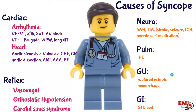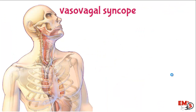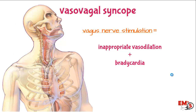The last category is reflex-mediated syncope, which includes vasovagal and orthostatic hypotension. Vasovagal syncope makes up a large portion of the patients we see. This is when you get an overdrive of vagus nerve stimulation causing vasodilation and a drop in blood pressure. Normally when blood pressure drops, your heart rate goes up to compensate. But with vagus nerve stimulation it's the opposite — you get bradycardia, causing too much loss of cerebral blood flow, and you end up passing out.